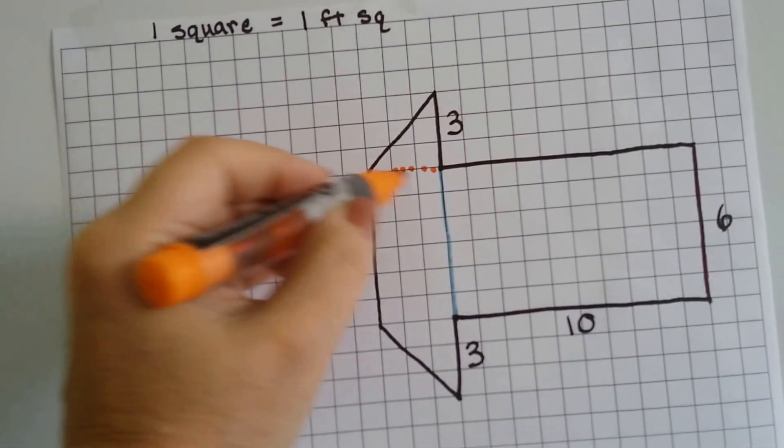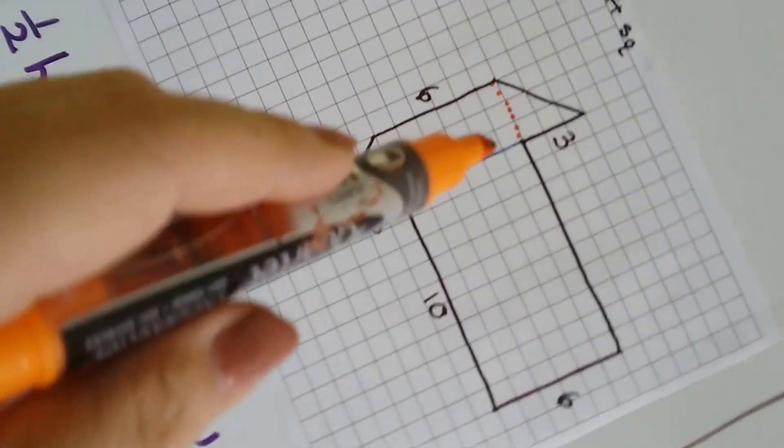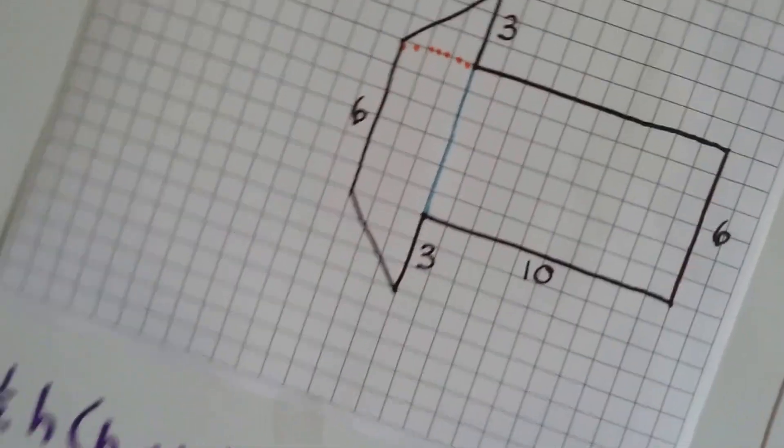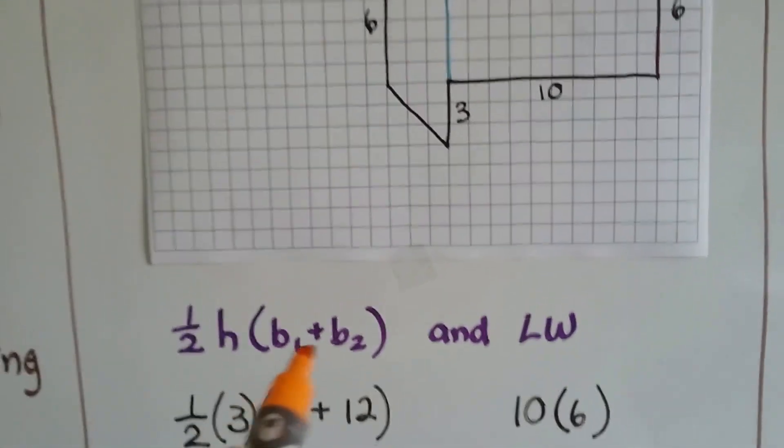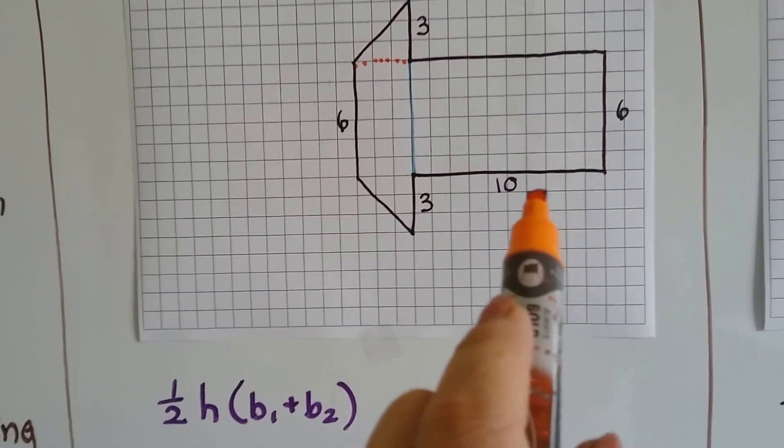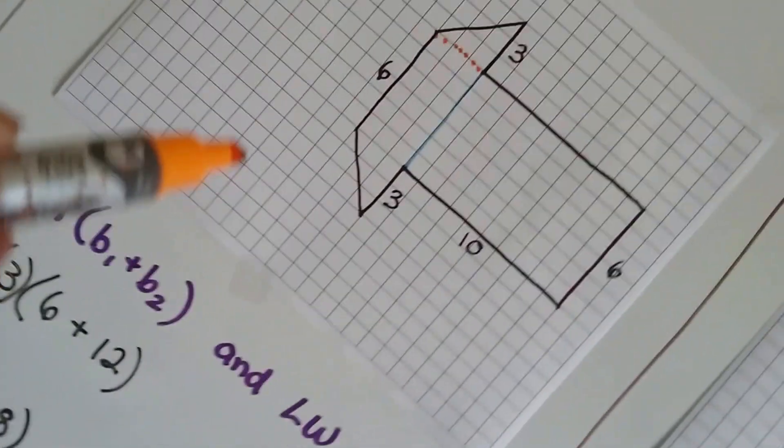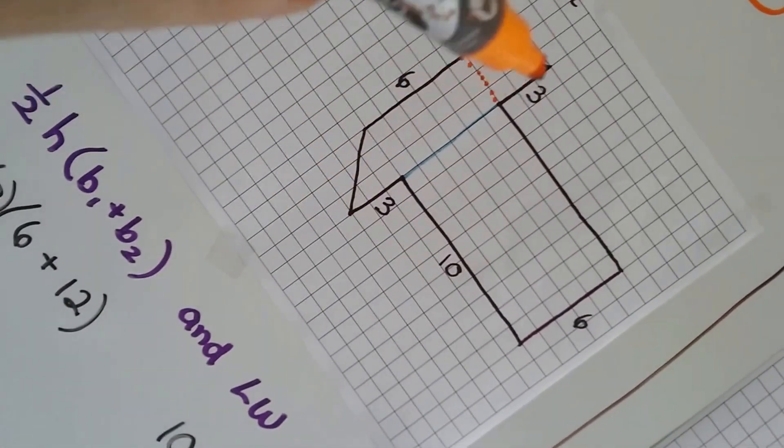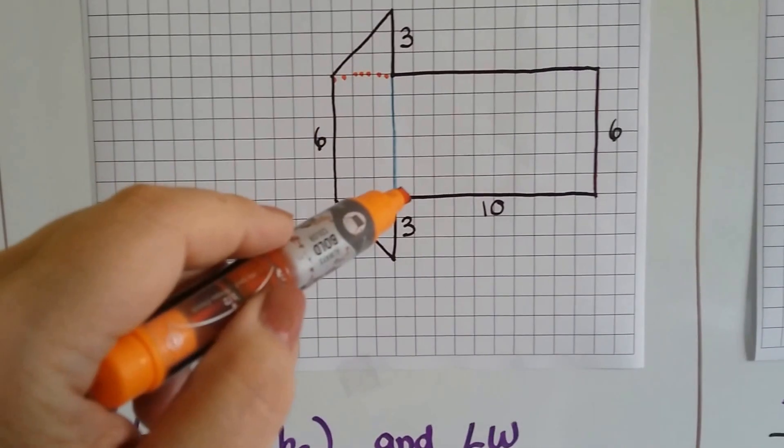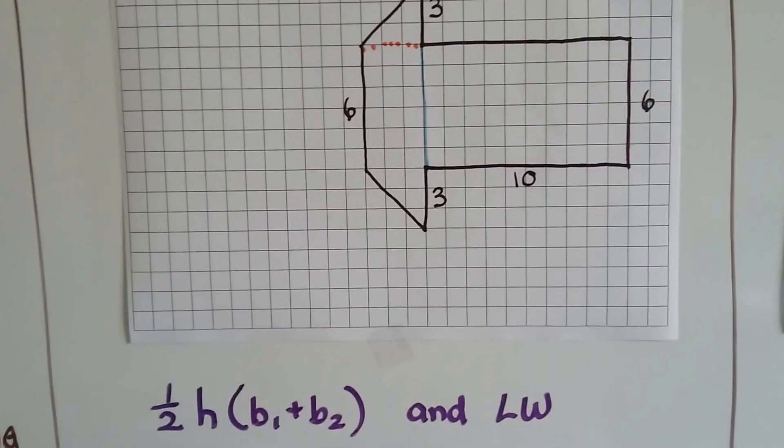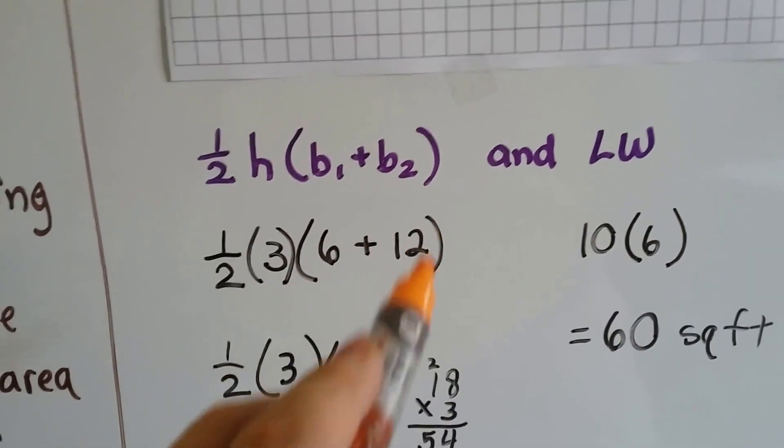So, the height is where I drew the orange line. The height is going to be 3. It's as if it was this way, and we said the height was 3. That's an important number. And then base 1 is this side right here. Again, if I turn it sideways, this is base 1, and that's base 2. So, base 1 is 6, and base 2 is 6, 7, 8, 9, 10, 11, 12.